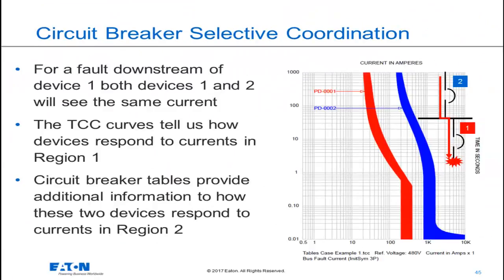These two circuit breakers are in series with each other in a power distribution system. For a short circuit downstream of device number 1, both of these devices will see the same short circuit current.